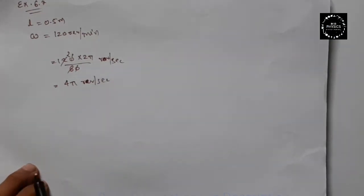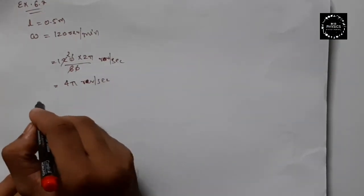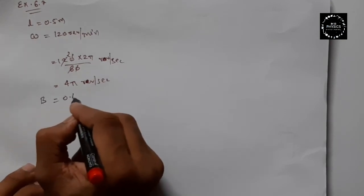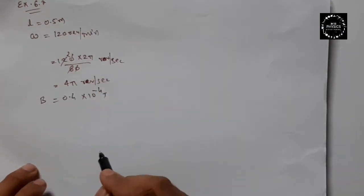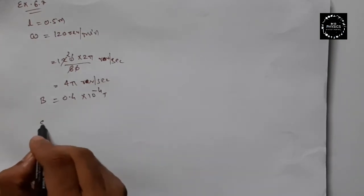B value is given: B will be 0.4 into 10 raised to minus 4 Tesla. So simple.